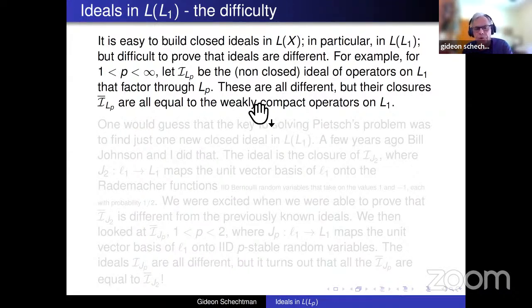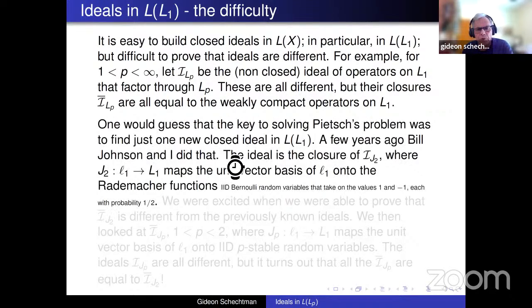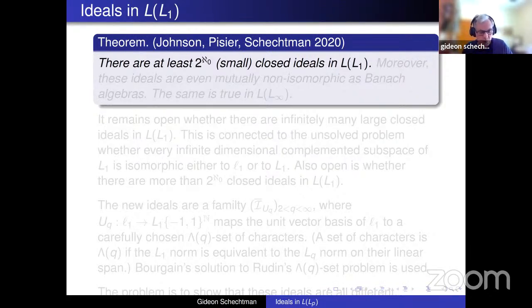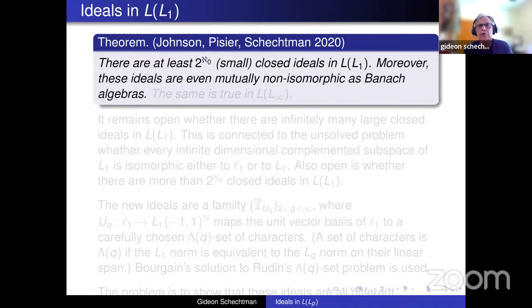There were many other attempts to build a new closed ideal that didn't succeed. What we proved — this is a theorem with Bill Johnson, Gilles Pisier, and myself — is that there are a continuum of closed ideals in L(L1). Remember, before there were only five known, and they all turned out to be small ideals. Moreover, any two of these ideals are non-isomorphic as Banach algebras.